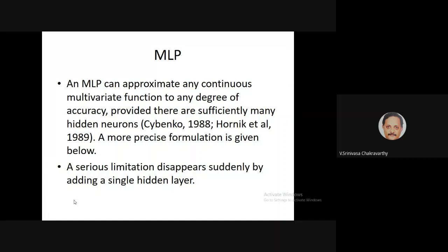The theorems are generally proposed for single output, but they can be extended to multiple outputs because you have independent neurons in the output layer. The theorem says that if the function is defined over a finite domain and is continuous, then it can be learned with arbitrary accuracy by an MLP with a single hidden layer, as long as there are enough neurons in that hidden layer.